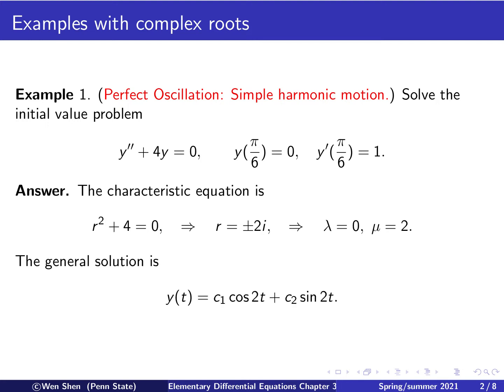We can now form the general solution. Since the roots are pure imaginary, we'll just have sine and cosine. The general solution is c1·cos(2t) plus c2·sin(2t), where c1 and c2 are arbitrary constants to be determined by the initial values.